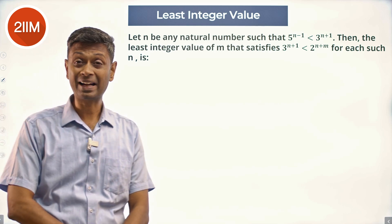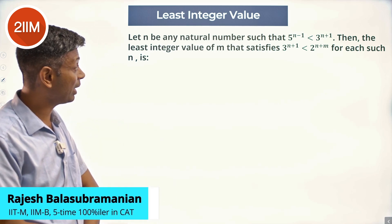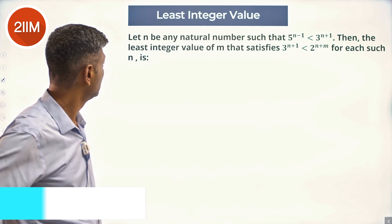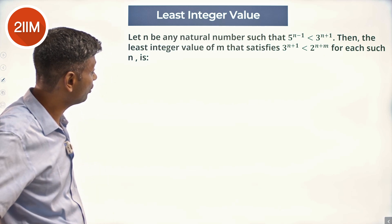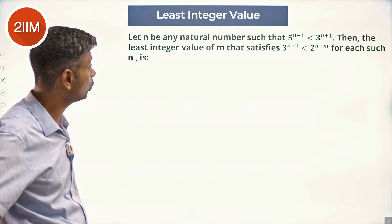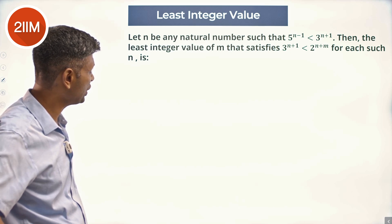Let n be any natural number such that 5^(n-1) < 3^(n+1). Then the least integer value of m that satisfies 3^(n+1) < 2^(n+m) for each such n is: